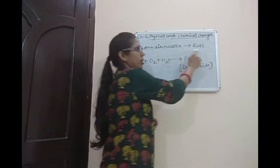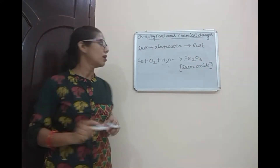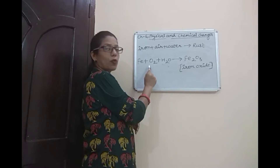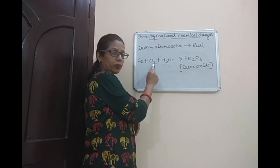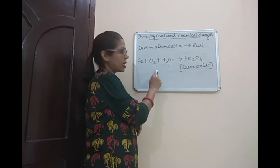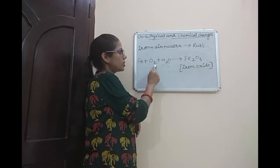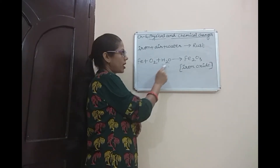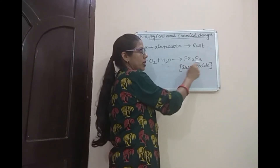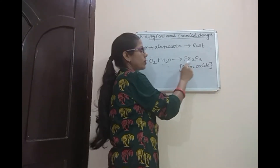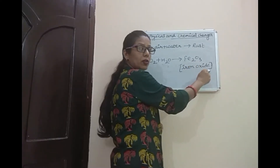We can write the chemical equation of rusting. Iron reacts with O₂ because oxygen is present in air and water. When an iron object comes in contact with air and water, a reddish brown layer is deposited. This reddish brown layer is known as rust. Rust means Fe₂O₃, also known as iron oxide.